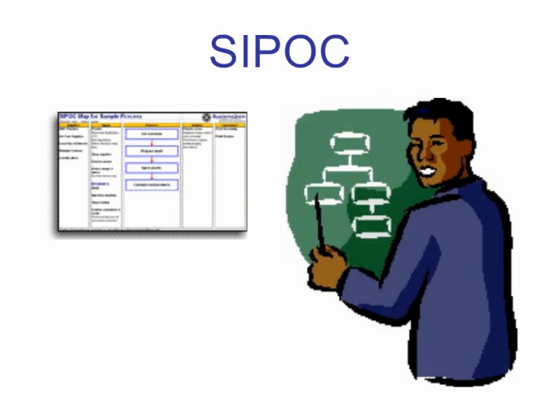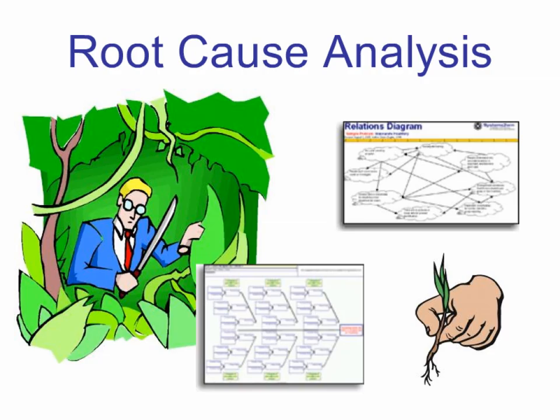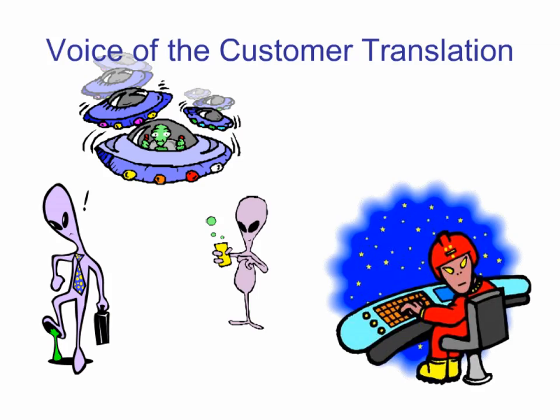The Systems2win templates provide things like a SIPOC worksheet to clarify boundaries and better understand everything that goes into and out of a process. Failure Modes and Effects Analysis to identify, anticipate, and eliminate possible quality problems. Root Cause Analysis to dig out your root problems rather than hacking at the leaves. Pareto Analysis to identify those 20% of your problems that cause 80% of your grief. Collecting voice of the customer data and translating your customers' sometimes less than fully clear words into hard, measurable criteria that your engineers can understand.